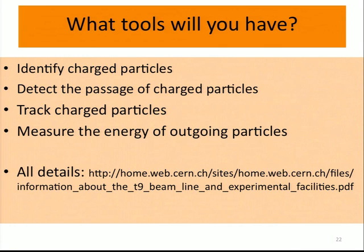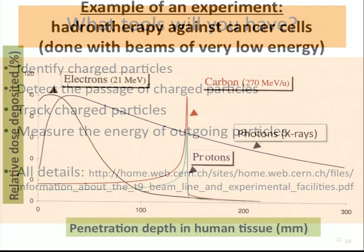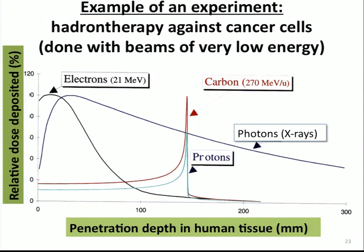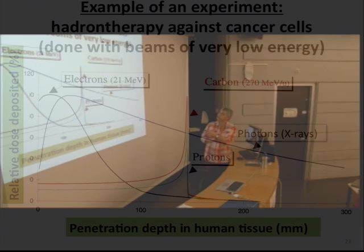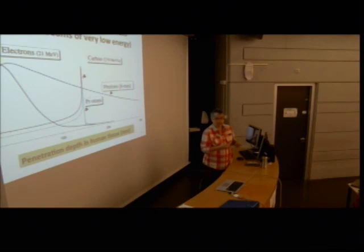Let me give you an example of what can be done with a beam. One technique being studied at CERN is called Hadron Therapy, a new technique to fight cancer by killing cancer cells. On the plot I'm showing here is the relative dose deposited in percentage versus penetration depth in millimeters in human tissue. The classic way to zap cancer cells is radiotherapy with X-rays - photons of high energy. X-rays deposit most of their energy close to the entrance point and then less and less as they go in. Electrons deposit all their energy at the entrance and then very little. With X-rays, you can efficiently zap cancer cells that are really close, but less if they're further inside the body.